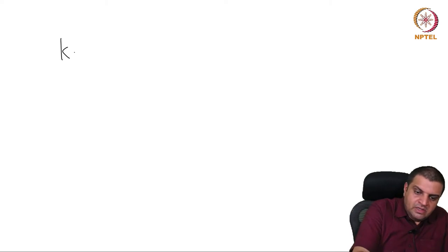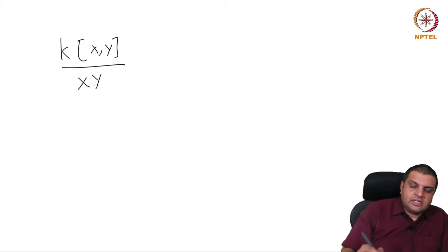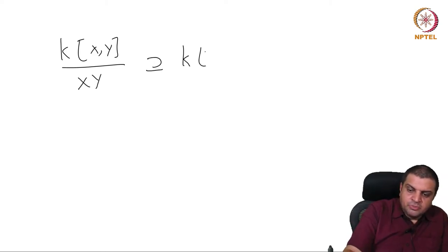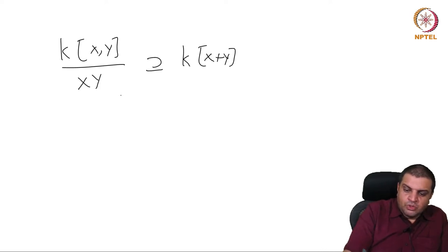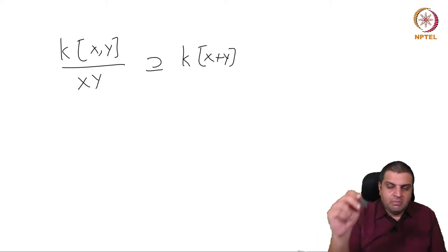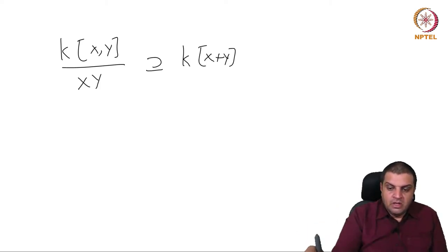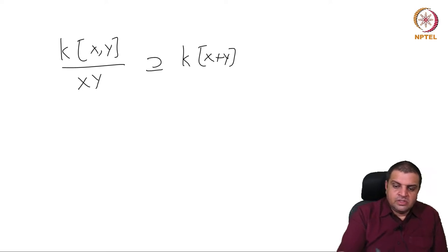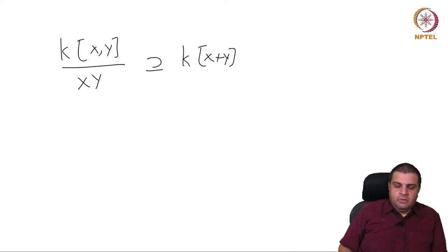We can go back to one of the earlier examples: K[X, Y]. We can think of the subalgebra generated by X plus Y. This was where we had mapped K[T] to K[X,Y] with T mapping to X plus Y. This is an example of Noether normalization.